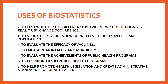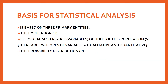The basis for statistical analysis rests on three primary entities: the population, the set of characteristics (variables), and the probability distribution. The population is the group selected for a particular study. For example, if you've introduced a new drug and want to see its efficiency, you select a group of people with the disease you're studying - this becomes your population.